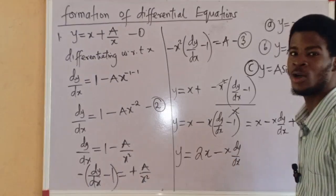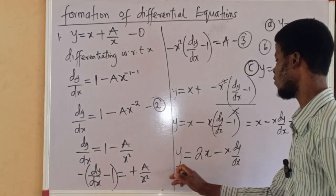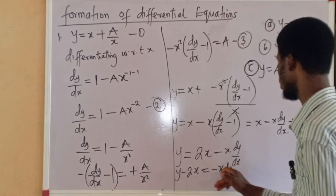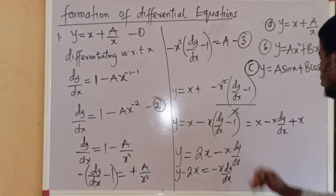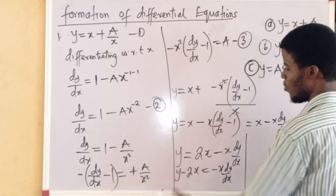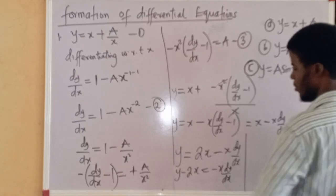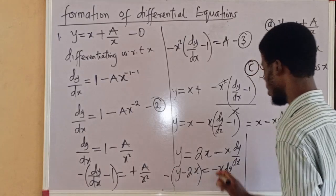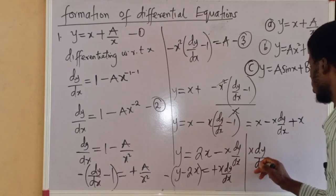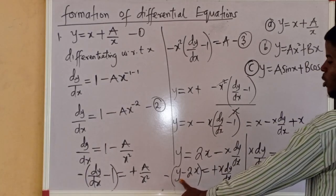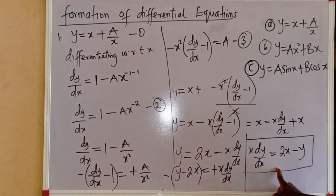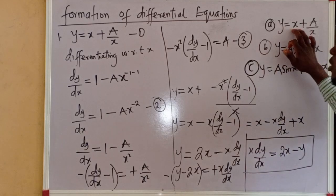So let us make dy/dx the subject of the formula. Expanding: y equals x minus x·dy/dx plus x. So x plus x is 2x. We have y equal to 2x minus x·dy/dx. Taking 2x across: y minus 2x equal to minus x·dy/dx. Dividing both sides by minus x: x·dy/dx equal to 2x minus y. So this is the differential equation formed from this very equation.